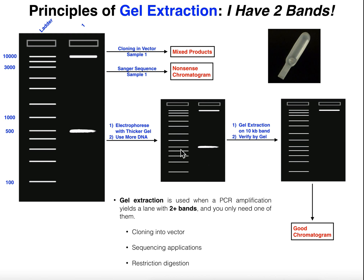Whenever you electrophorese in the thicker gel with more DNA, you should get something that looks identical to what you got after the PCR reaction, because you're electrophoresing the same sample — just more of it. You might wonder why you'd electrophorese it again to get something identical. Well, now you've actually separated these two bands but with a lot more material — sometimes even 20 microliters of it. So now you're ready to do the actual gel extraction.